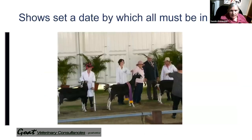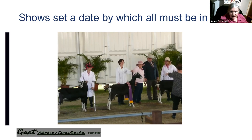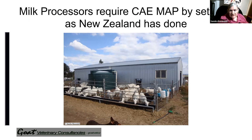Some things I think would help get people into the CAE MAP scheme: currently in Queensland you must be CAE accredited in order to show at shows for which there are Dairy Goat of the Year points. I'd imagine that same rule would apply, and as people reach the date when their CAE accreditation by Queensland lapses, they should be in the CAE MAP. Also, milk processors in New Zealand have been given a date by which CAE must be eradicated from all their commercial herds — that would again encourage people to join MAP.